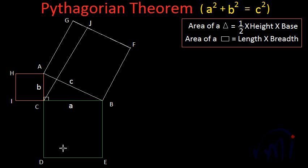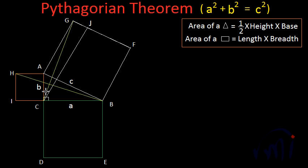To prove that, I am going to draw a line from point C to G and a line from point H to point B. Now, line AH equals B and line AC also equals B. Similarly, line AJ equals C and line AB equals C. Angle HAB equals angle HAC plus angle CAB, which is 90 degrees plus this small angle. In triangle GAC, angle GAC is also equal to 90 degrees plus this small angle. So by side-angle-side, triangles HAB and CAG are congruent, meaning their areas are also equal.